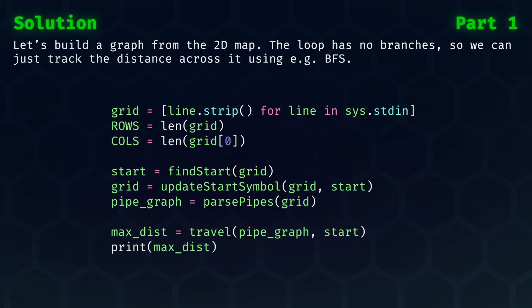Let's build a graph from the 2D map. This can work really well because the loop has no branches, so we can just track the distance across it using, for instance, a breadth-first search.